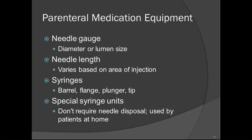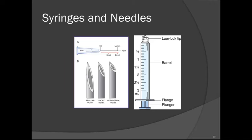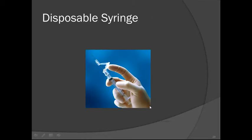Syringes have different parts: the barrel, flange, plunger, and tip. Special syringe units don't require needle disposal and are used by patients at home. Some syringes retract the needle inside after the injection is given. The needle has a point, bevel, and lumen; the syringe has a luer-lock tip, barrel, flange, and plunger. Disposable syringes must go in a rigid, puncture-proof sharps container.